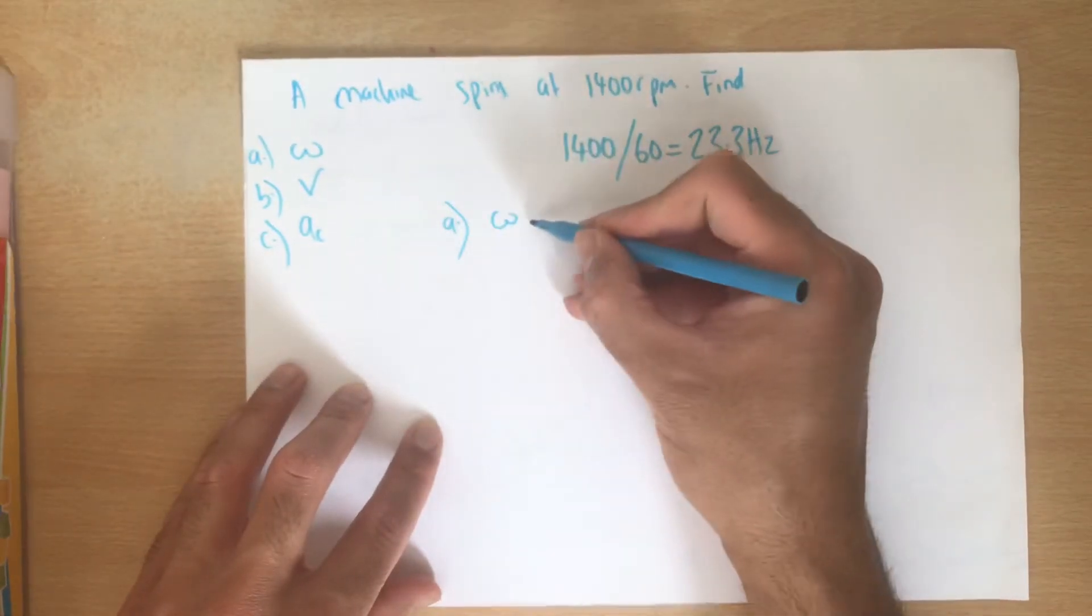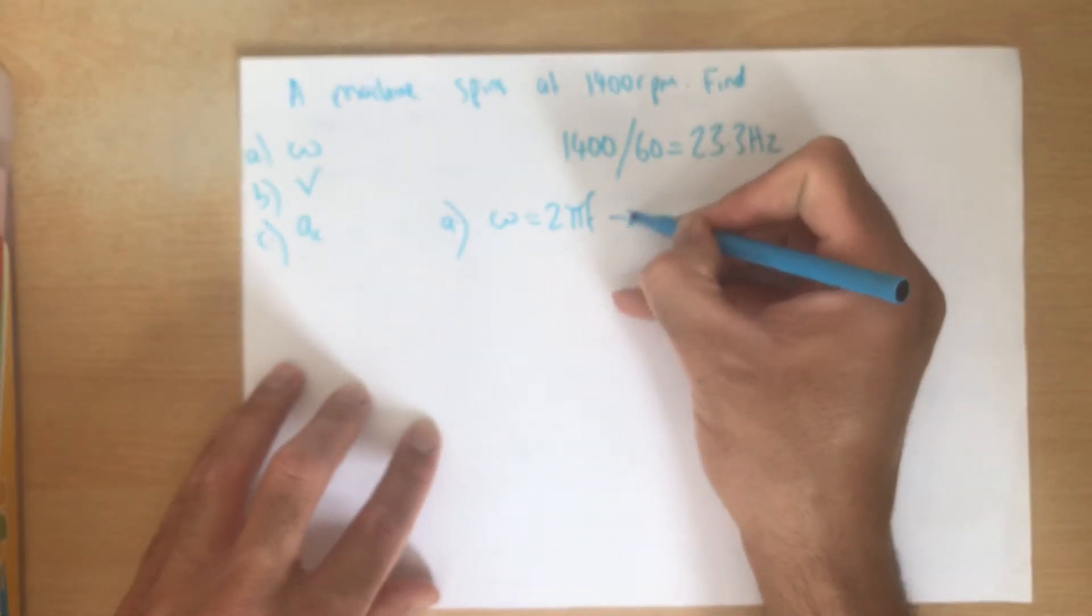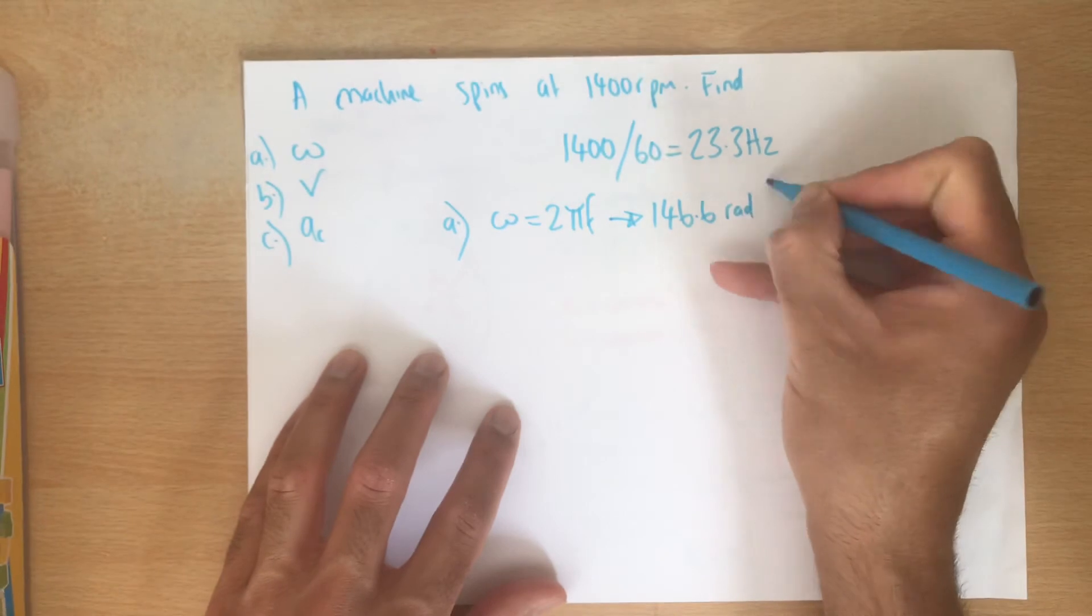Omega, so part a, omega is given by 2 pi f. And in our case if we do 2 times by pi times by 23.3 you get an answer of 146.6 radians per second.